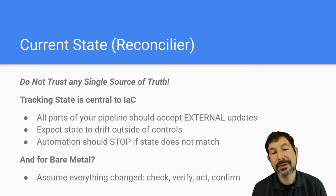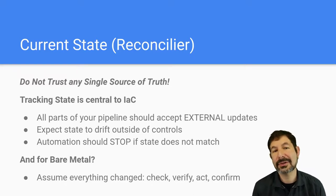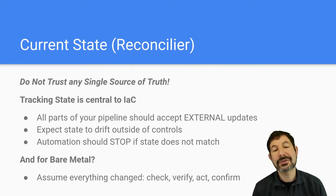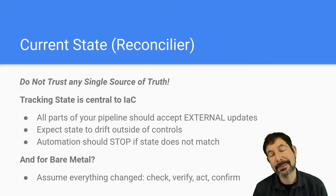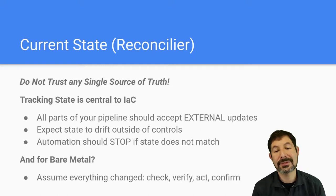Current state is a critical component here — this is what we often call the reconciler pattern. The challenge with current state is that there isn't going to be any one source of truth. If something is designed to be a source of truth, it is not going to be trustworthy in infrastructure, especially since things change outside of any one tool's control. The resilience of your whole system depends on every tool being able to recognize that fact. Automation should stop when things don't match the patterns it's expecting — keeping trying will cause more harm, especially in physical systems.